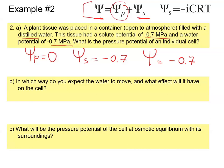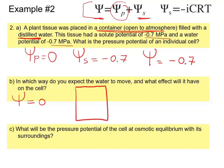Now, which way would we expect water to move and what effect will it have on the cell? The open container was filled with distilled water, which has a water potential of zero — the highest degree of potential energy possible. I'll draw the beaker: our beaker has zero water potential, and the cell inside it has negative 0.7 megapascals.